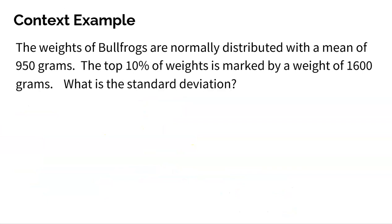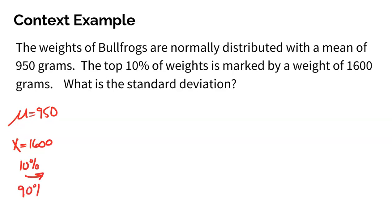Let's do another example in context. The weights of bullfrogs are normally distributed with a mean of 950 grams. The top 10% of weights is marked by a weight of 1,600 grams — so 10% is above 1,600, which simultaneously means 90% is below or to the left. We want to find the standard deviation again.